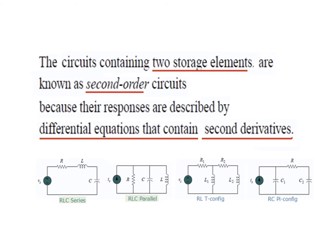If you see the circuits shown, here we have one inductor and one capacitor; here again we have one capacitor and one inductor; here we have two inductors; and in this circuit we have two capacitors. So all these have two storage elements, and so they are second-order circuits.